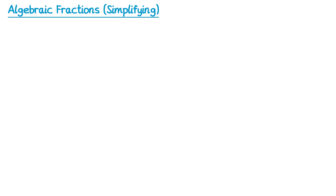First of all we have some single bracket factorisations, like this one here. In both terms here I have a common factor of 3, so I can factorise that out. Then inside the brackets to get 3a I would need to multiply by a, and then to get the 21 I would need to multiply by 7.